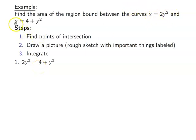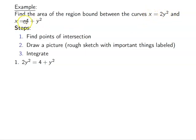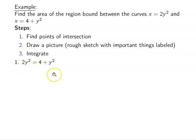To find the intersection points, I set 2y² = 4 + y², which gives y² = 4, so y = ±2. Substituting into the first equation: x = 2(±2)² = 2(4) = 8. So the points of intersection are (8, 2) and (8, −2).